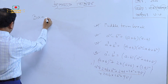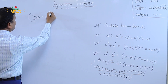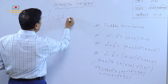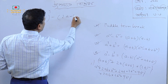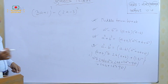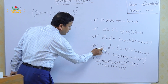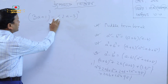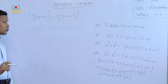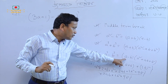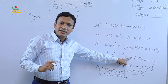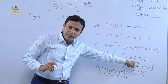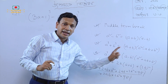3a plus 1, whole cube minus 2a minus 3, whole cube. This is the first: a³ minus d to the b³. a³ minus b³. Now the answer is: a minus b, a minus b, a² plus ab plus b².